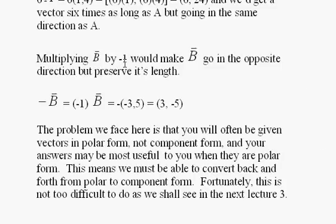Multiplying a vector B by -1 would make B go in the opposite direction but preserve its length. So if I take -B, it's like multiplying it by -1 and putting a negative sign in front of the ordered pair of B, (-3, 5). You distribute, you multiply those two out, and you get (3, -5). So that's pretty simple.